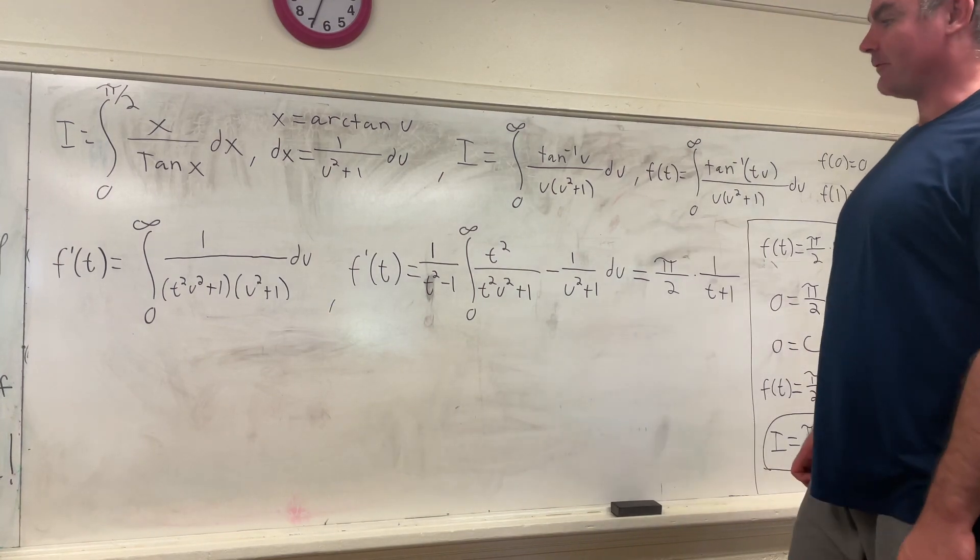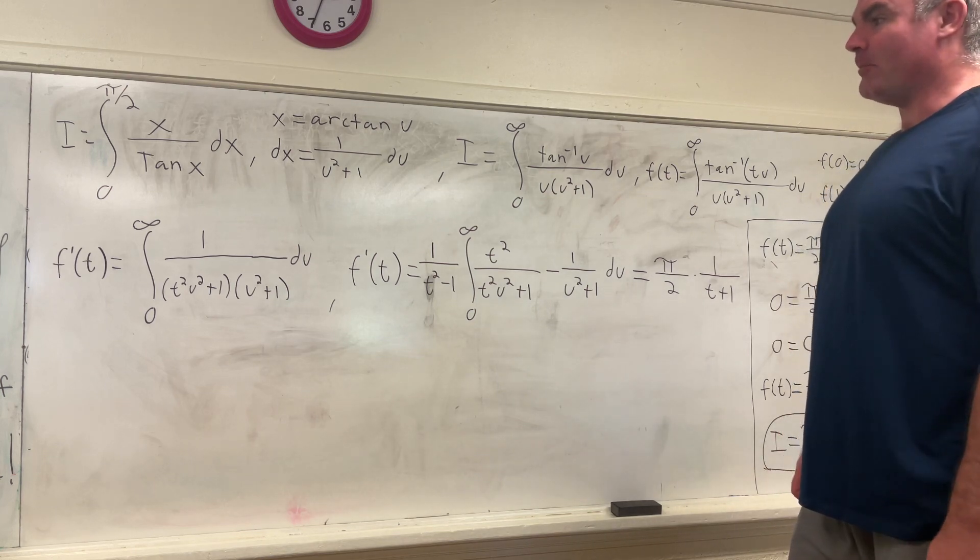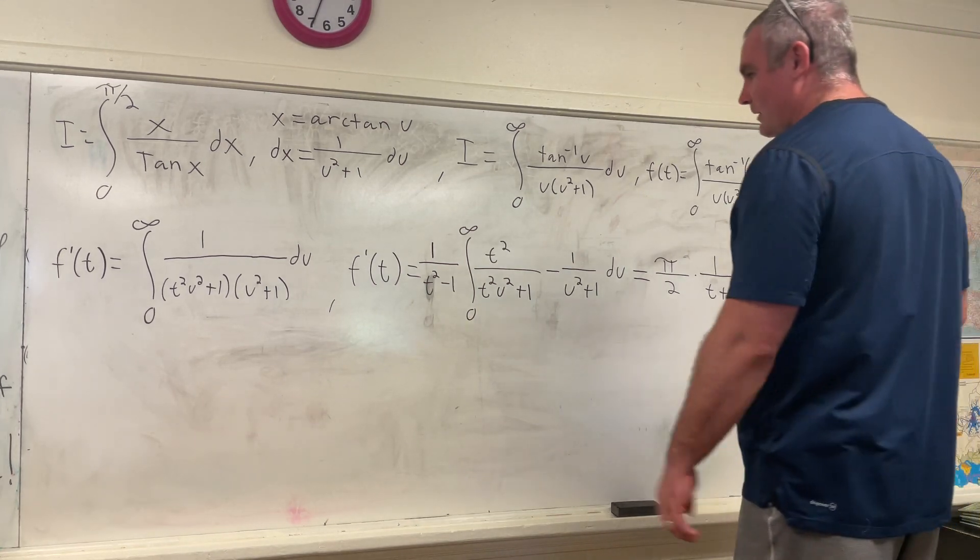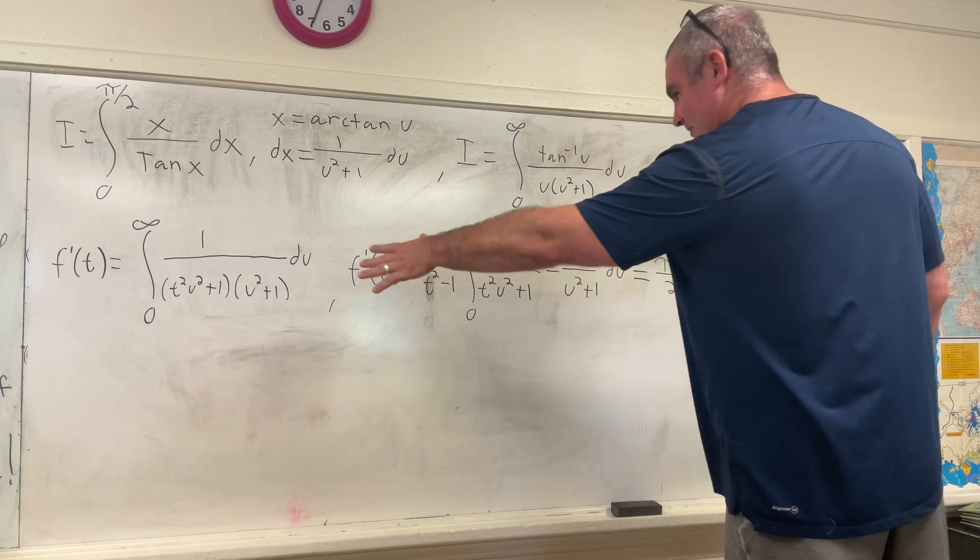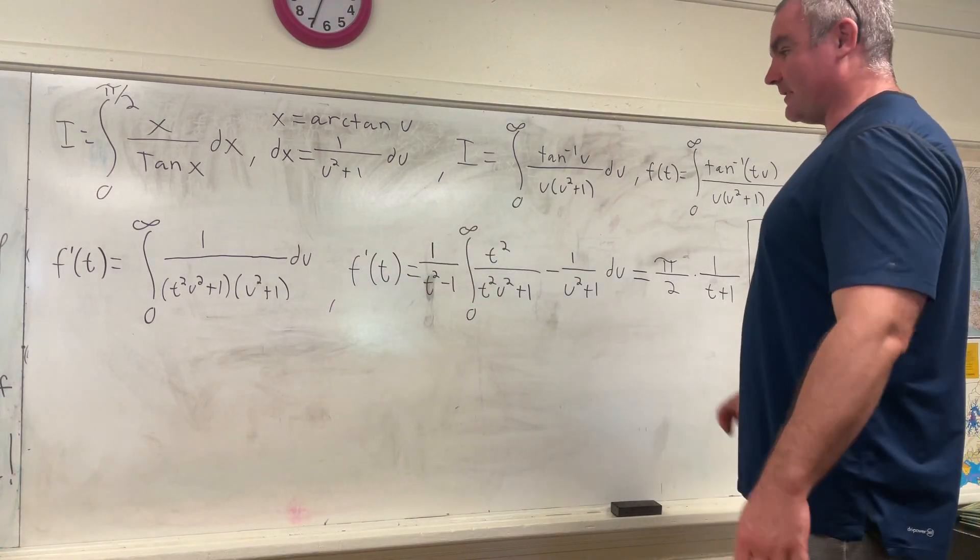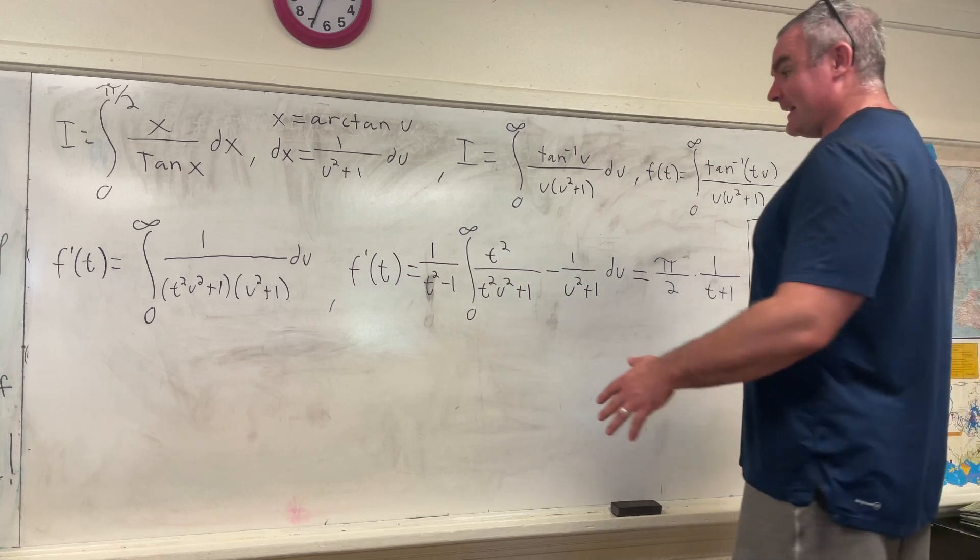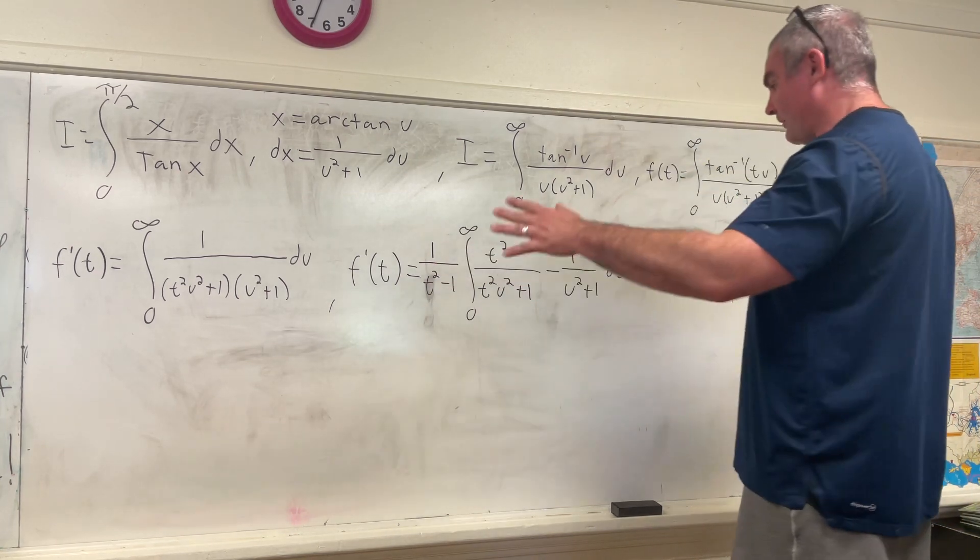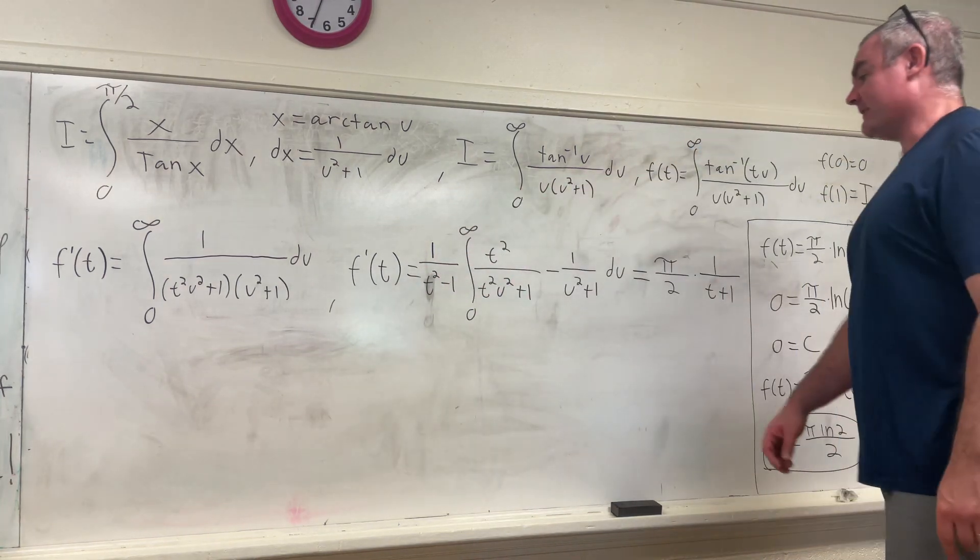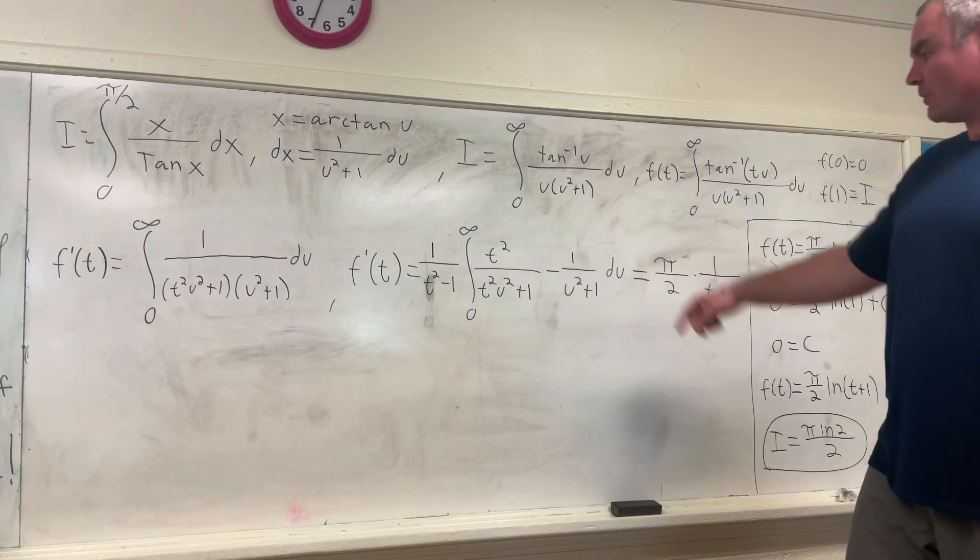This requires partial fraction decomposition and then some fairly basic but messy integration. And what you do if you use partial fraction decomposition on that thing, and again, it's very messy, and I'm not showing it here, but you can definitely do it. But anyway, what you get is f prime of t after all the simplification and everything, f prime of t is equal to 1 over t squared minus 1 times the integral from 0 to infinity of t squared over t squared u squared plus 1 minus 1 over u squared plus 1 du.